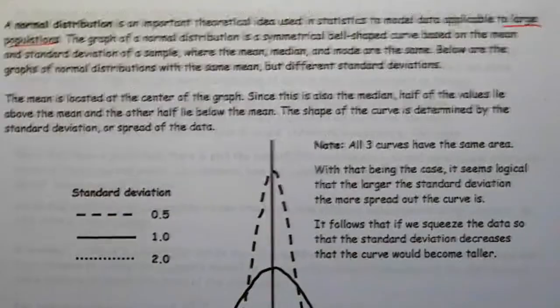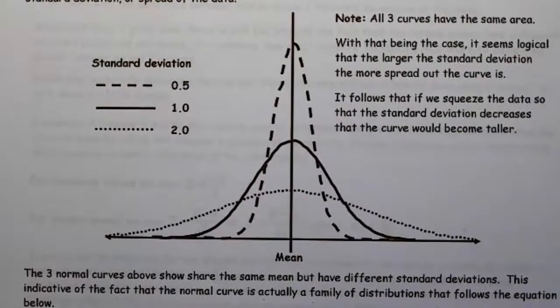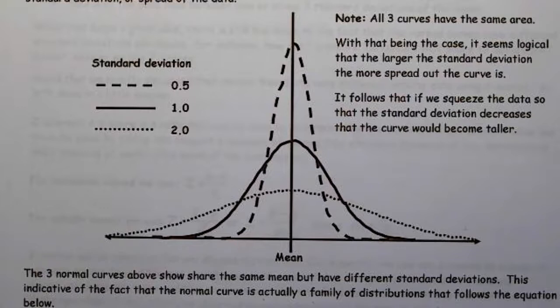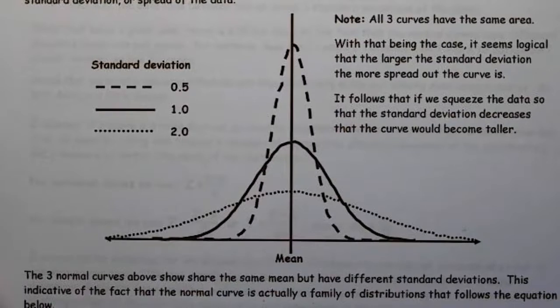The graph of the normal distribution is a symmetrical and bell-shaped curve on the mean and standard deviation of a sample where the mean, median, and mode are exactly the same. So we're looking at a bell-shaped curve, and actually, to be truthful, it's a family of curves.